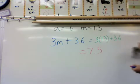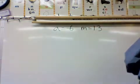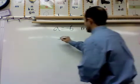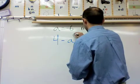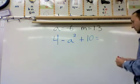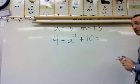So one final equation. We're going to have to use order of operations again for this one. And it's going to be 4 minus A squared plus 10. So now what I want to do is rewrite it. So I want to take these letters out and replace them with numbers.